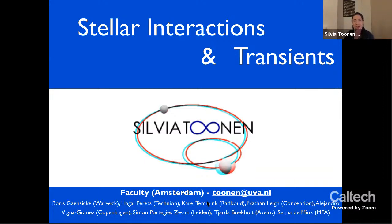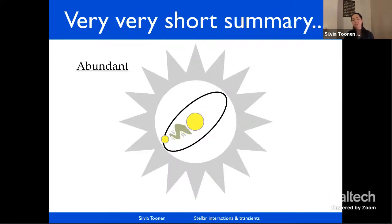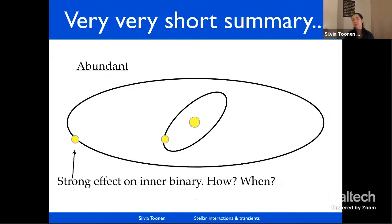Thank you for the introduction and invitation. Today I want to tell you about our work on stellar interactions and transients. I'll start at the end with a summary: these systems where we have two stars in orbit around one another are common, they evolve, they interact, and every now and then give rise to one of these bright transients. Besides binary systems, we also have plenty of triple systems — three stars in orbit — and an overall picture of triple evolution is still missing.